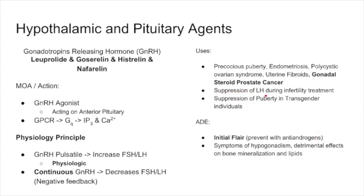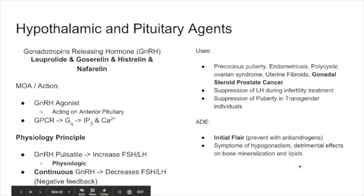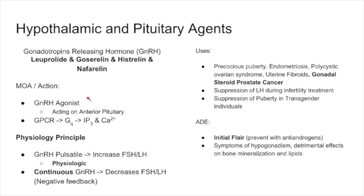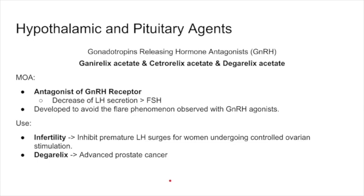We can also use GnRH agonists to suppress LH during infertility treatment to allow a controlled spike, ensuring the LH surge around day 13-14 for a nice ovulation. We can also use it to suppress puberty in transgender patients, inhibiting puberty from occurring so they're able to transition as they get older. Side effects include hypogonadism and detrimental effects on bone mineralization and lipid profile. The key concept: it's an agonist but given continuously it decreases FSH and LH.